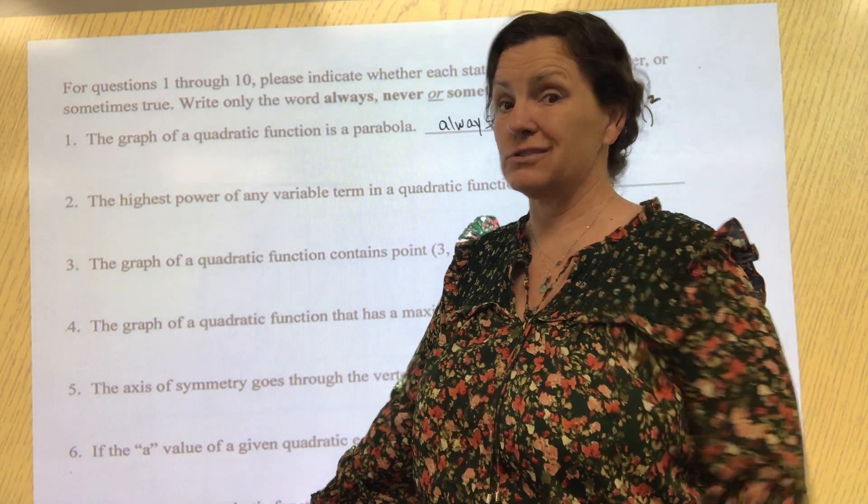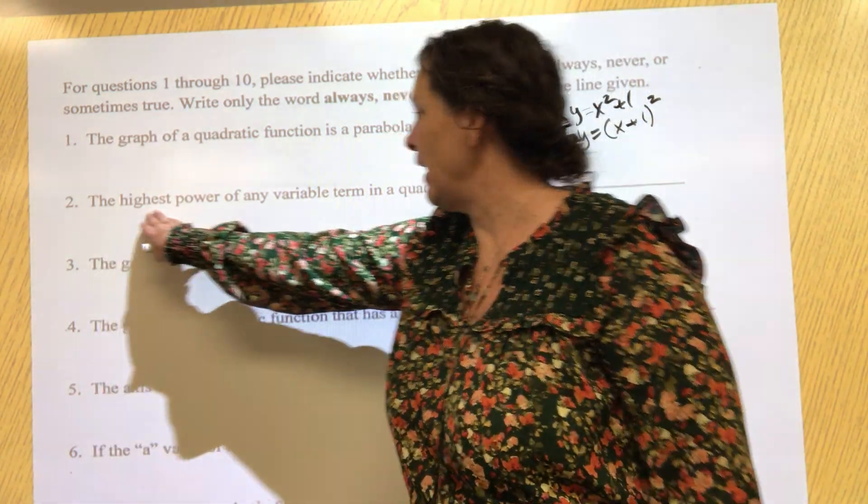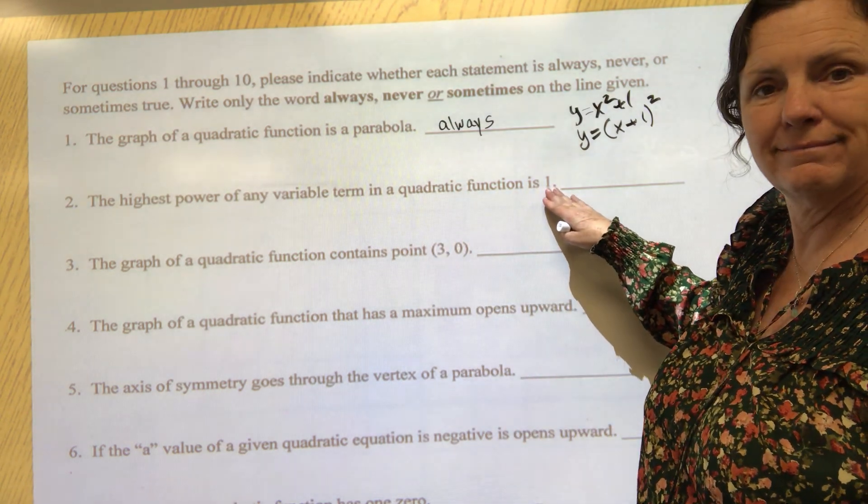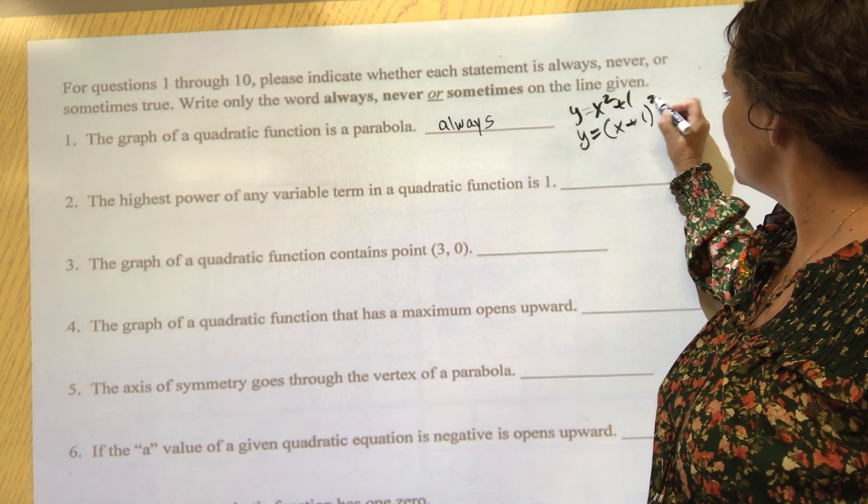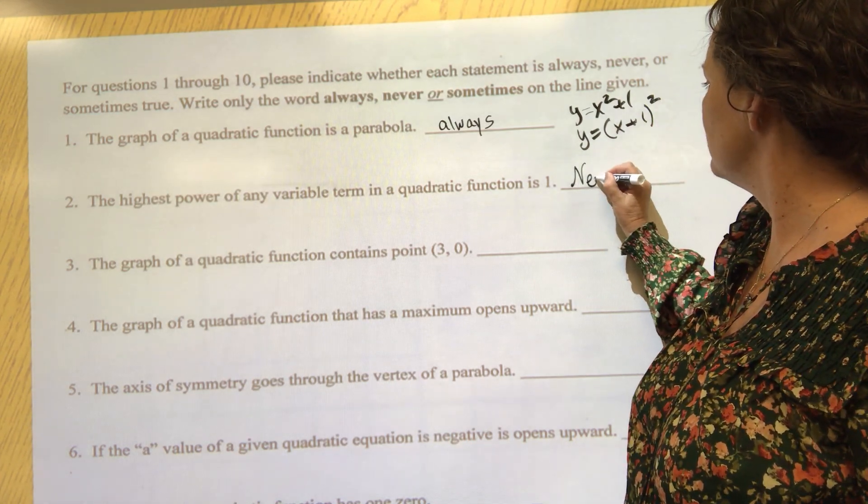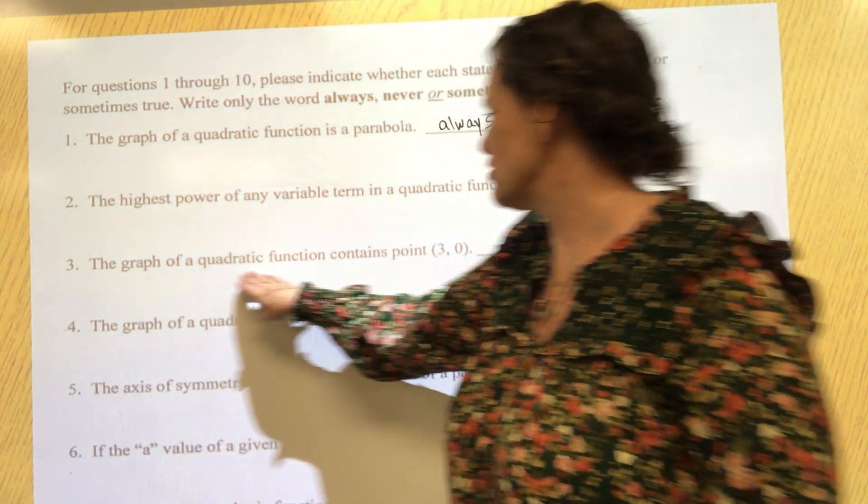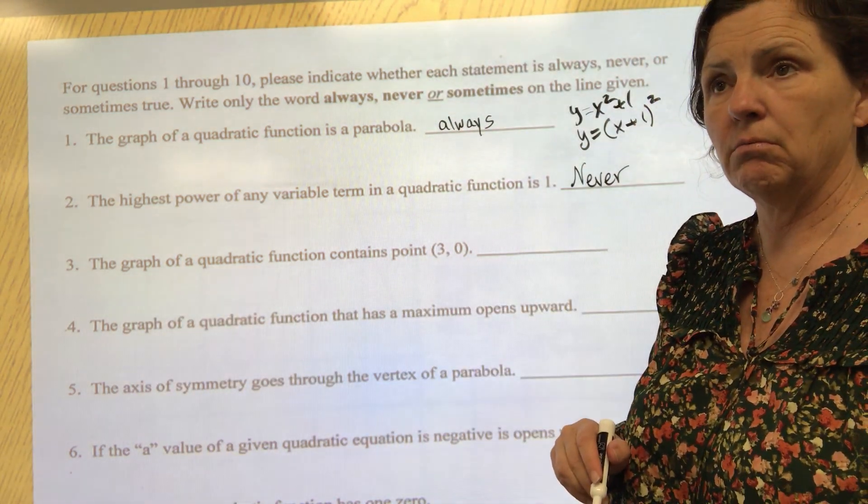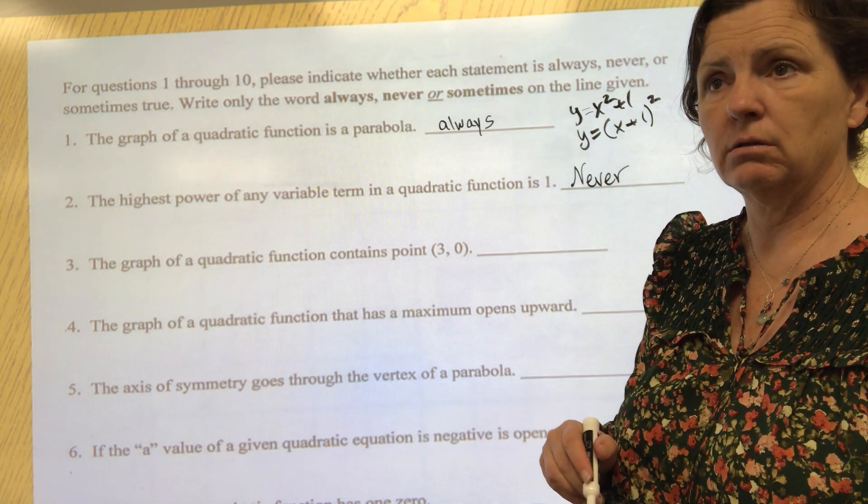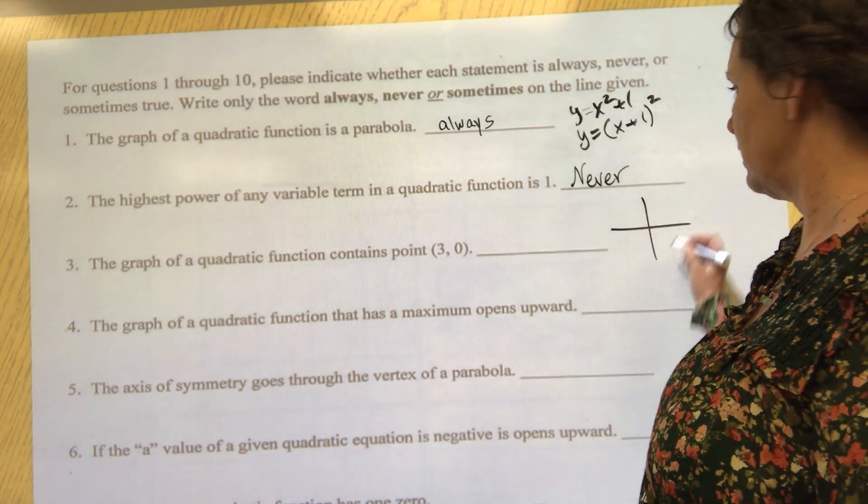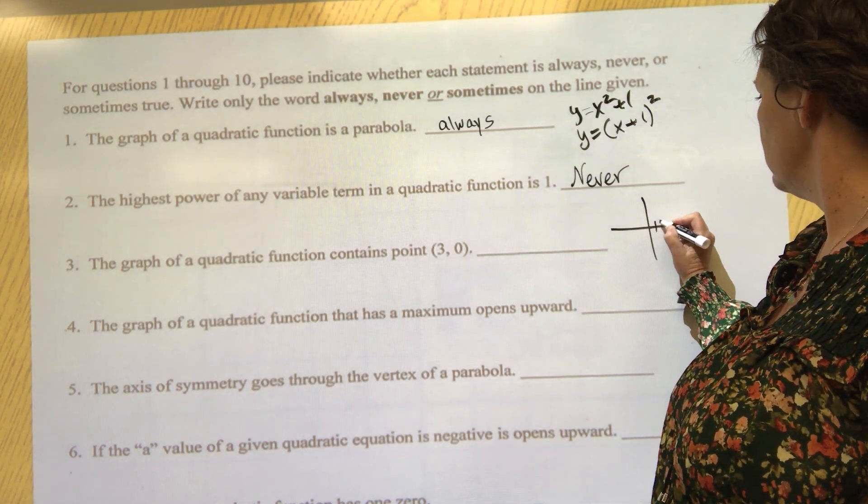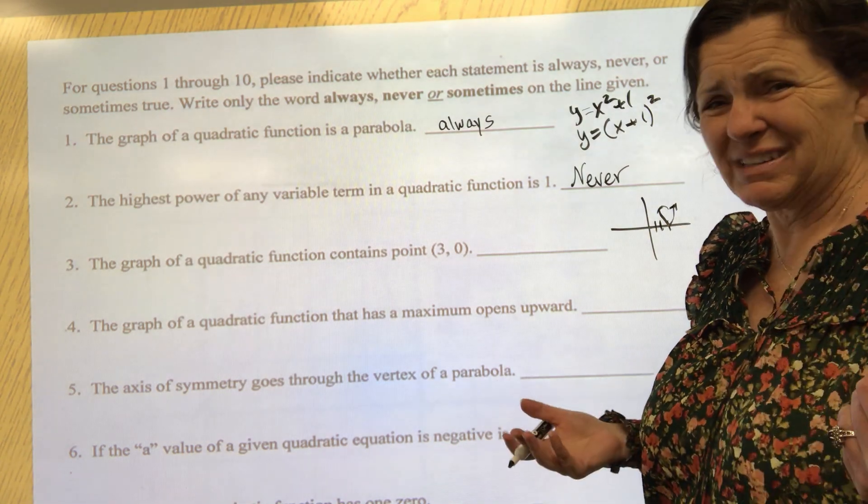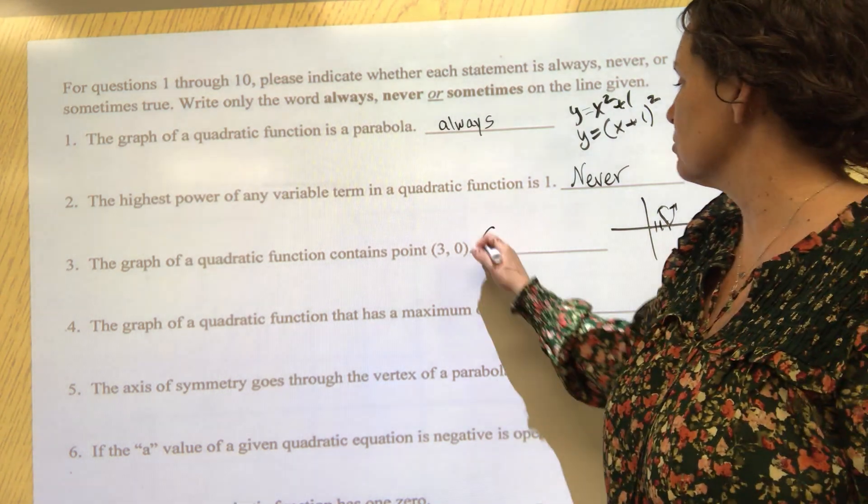I'm going to give you 15 of these on the actual test - you're only seeing 10 on your study guide. The highest power of any variable term in a quadratic formula is a one. That's not true, it's a two - never true. The graph of a quadratic function contains point (3,0). Well, I could literally create a shape where (3,0), yeah that one has (3,0) in it. Is it always going to have (3,0) in it? No, so this is sometimes.